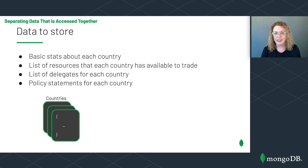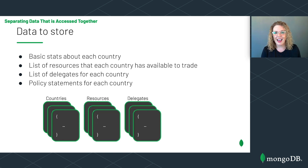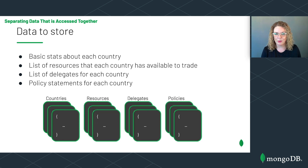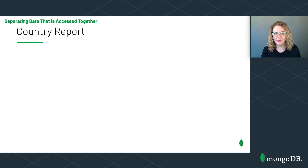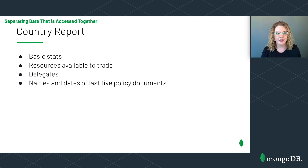She needs to store the following information: basic stats about each country, a list of resources each country has available to trade, a list of delegates for each country, and policy statements for each country. She begins by creating a collection for each: a countries collection, a resources collection, a delegates collection, and a policies collection. Leslie wants to generate a country report containing basic stats, resources available to trade, a list of delegates, and the names and dates of the last five policy documents.